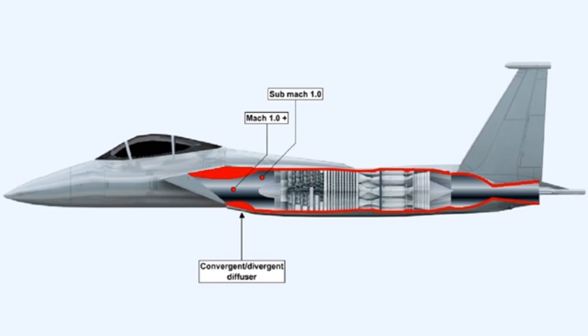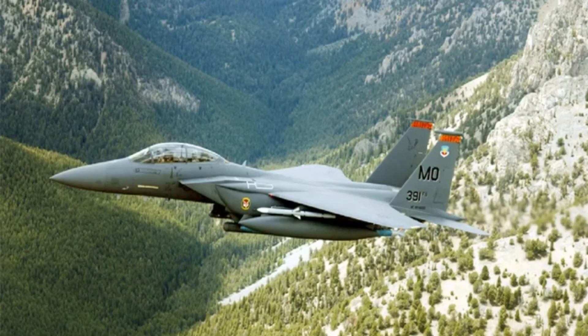The objective of the convergent-divergent diffuser is to slow the airflow to Mach 1 just before the throat of the diffuser. The subsonic flow thus obtained will then slow further as it moves through the divergent section, slowing to well below the speed of sound before it enters the engine. The geometry of the diffuser has to be specific to the speed the aircraft is flying. Generally the convergent-divergent diffuser is only suitable for short bursts of supersonic flight at less than Mach 2, such as on the F-15 fighter.